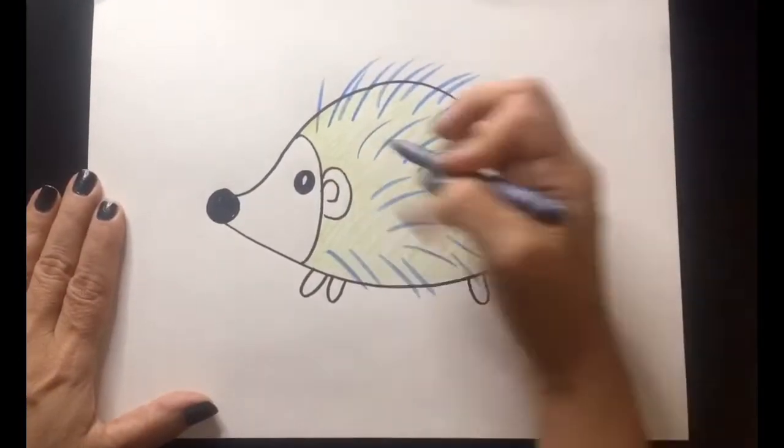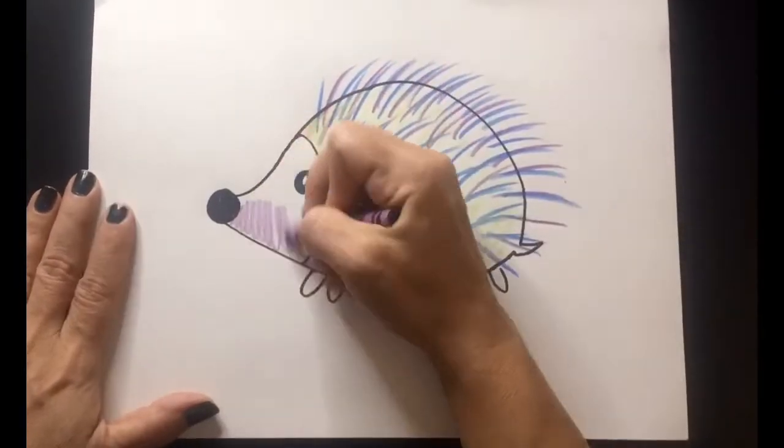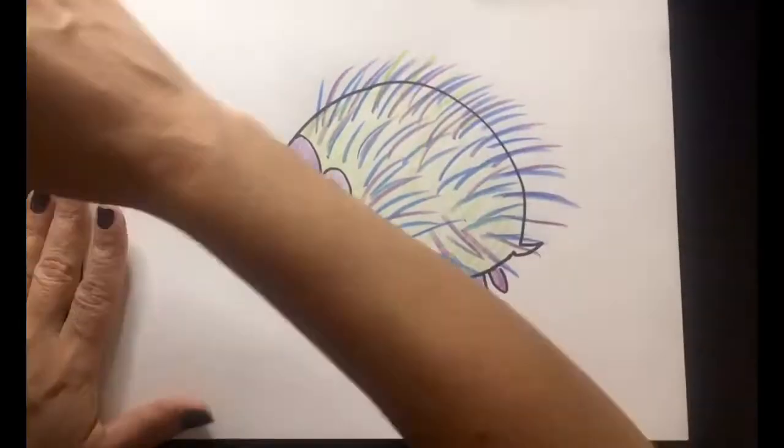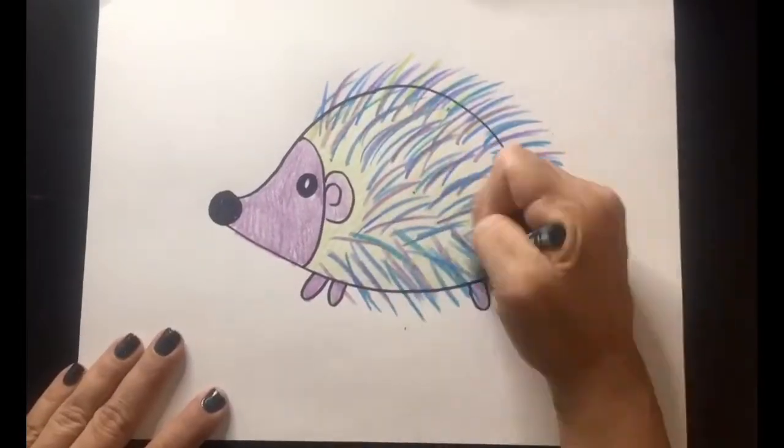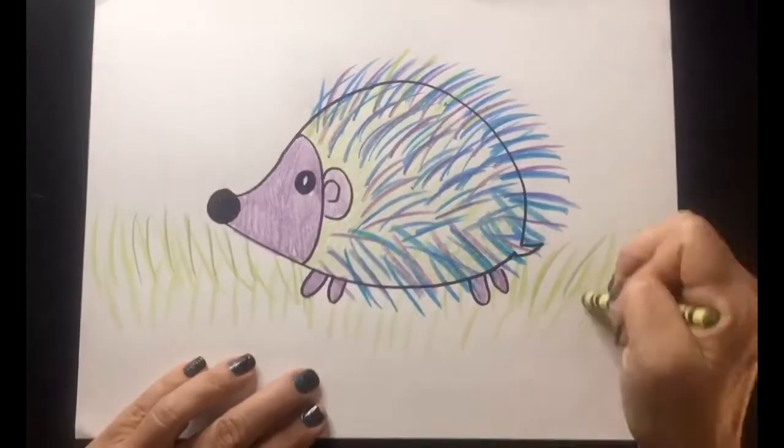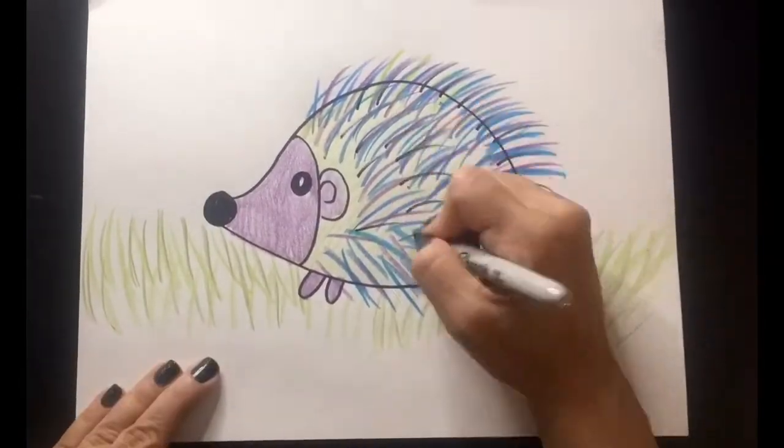This time, I'm going to use crayons to make the texture. Notice I'm drawing the quills using all different colors of crayons. I'm even using crayons to make the texture of the grass.